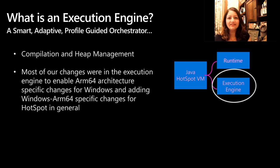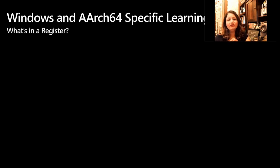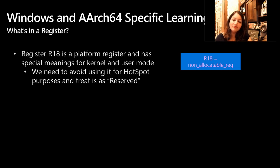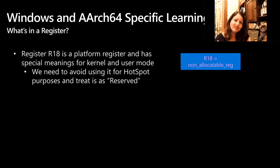The first nuance I wanted to highlight is an OS-specific one: the way register R18 is handled. R18 is a platform register, meaning it's reserved and has special meaning in user-internal mode, so we had to treat it as reserved. This particular nuance is specific to Windows, and we also found that it applies to macOS, so we could carry this learning into the Mac port as well.